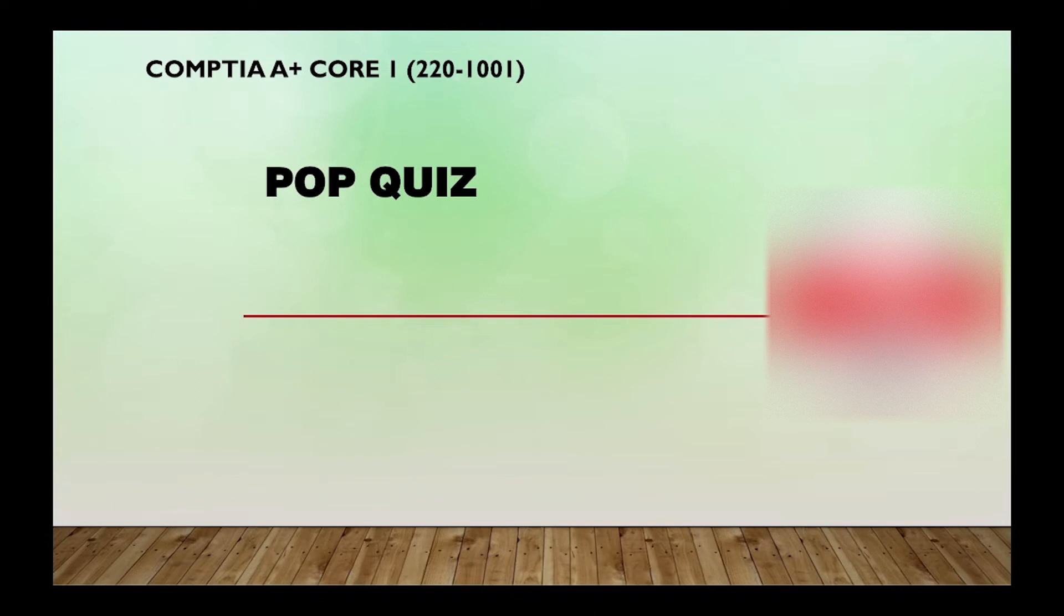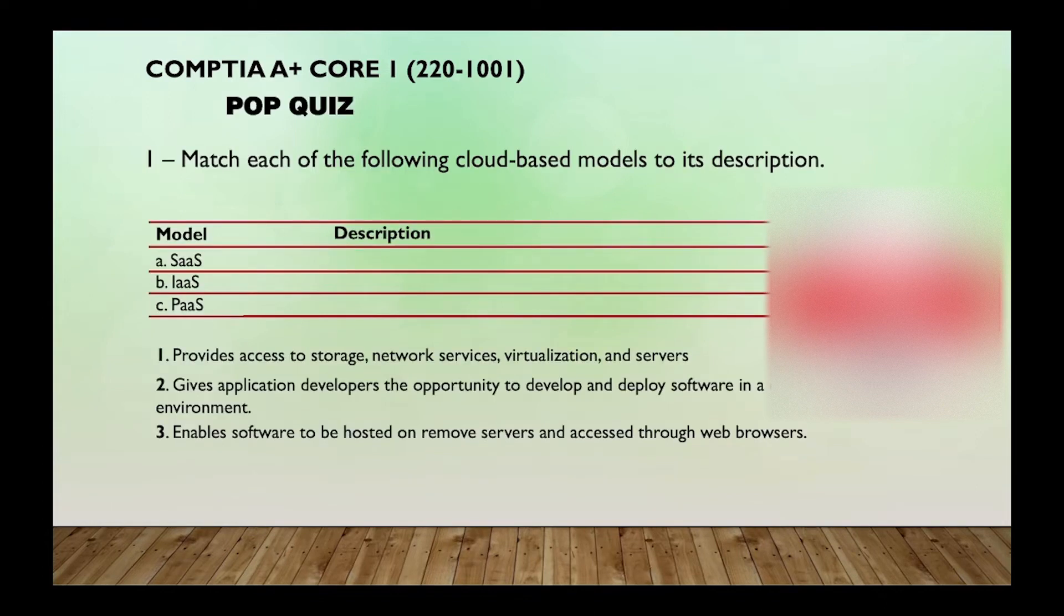All right, so now we are working on Part 16, so let's get started. Match each of the following cloud-based models to its description. We have the model on the left side: Security as a Service, Infrastructure as a Service, and Platform as a Service. And we have three descriptions that we will match with them. One, provides access to storage, network services, virtualization, and servers. Number two, gives application developers the opportunity to develop and deploy software in a cloud environment. Or three, enables software to be hosted on remote servers and accessed through web browsers.